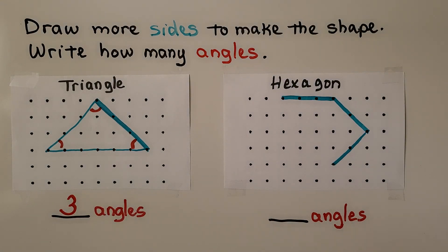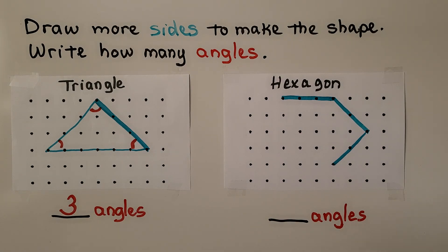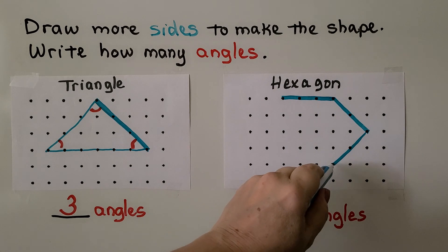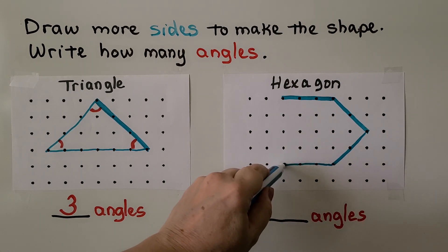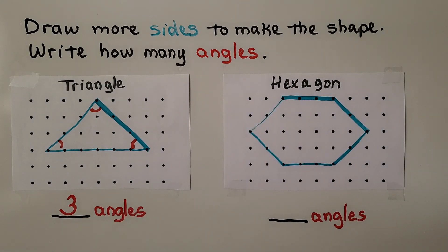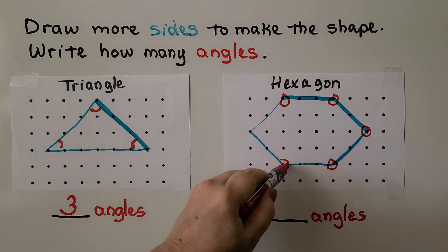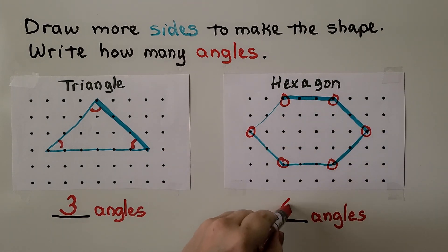We can do it for the hexagon. A hexagon has six sides. It's already got one, two, three sides. We need to give it three more sides. We've got three, four, five, and that would be six. And we can count the angles on the hexagon: one, two, three, four, five, six. A hexagon has six sides and six angles.